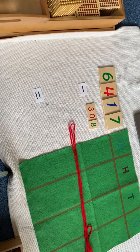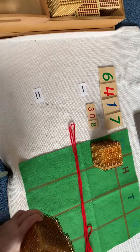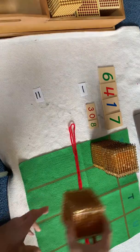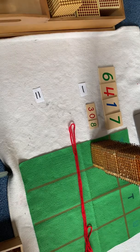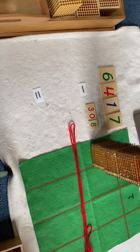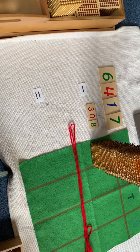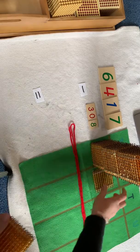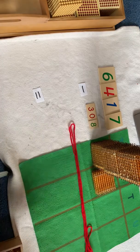We need six thousands. One thousand, two thousands, three thousands, four thousands, five thousands, six thousands. Now we need four hundreds. One hundred, two hundreds, three hundreds, four hundreds.